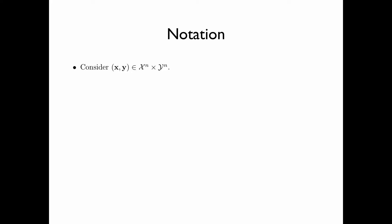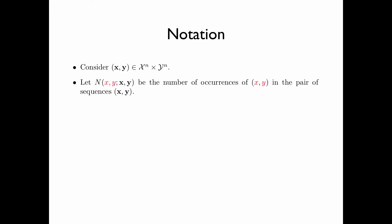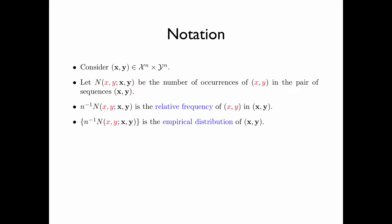Here are some notations. Consider a pair of sequences x and y of length n. Let N(x, y; x-sequence, y-sequence) be the number of occurrences of the pair of values x, y in the pair of sequences x and y. Dividing this by n gives the relative frequency of the pair of values x and y. The collection of relative frequencies is called the empirical distribution of the pair of sequences x and y.